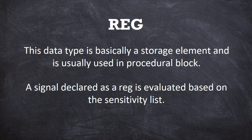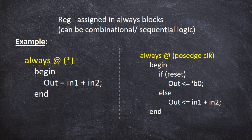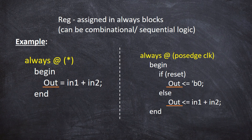With inputs A and B and output C_out, the sensitivity list is always @(A, B). This is evaluated based on the sensitivity list. You can use the register block in two ways. On the left side it is always @(*), which is combinational logic. On the right side it is always @(posedge clock), which is sequential logic. So the register can be used for both combinational and sequential logic.